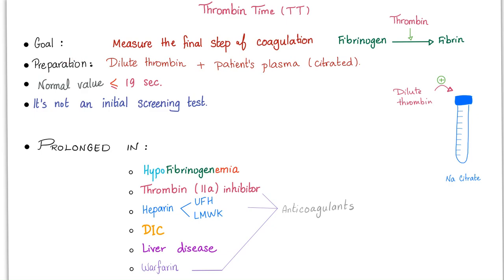Thrombin time (TT) measures the final step: fibrinogen to fibrin. Preparation: add dilute thrombin to the patient's plasma in a blue top test tube. Normally less than 19 seconds. It's not an initial screening test — PT and PTT are. TT is prolonged in hypofibrinogenemia, thrombin inhibitors, heparin (activates antithrombin 3), DIC (fibrinogen consumed), and liver disease (fibrinogen not produced). Warfarin inhibits the vitamin K-dependent gamma carboxylation of factors 2, 7, 9, and 10.